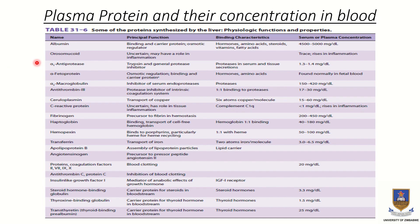These are the plasma proteins and their concentrations. We have albumin, which serves as an oncotic protein. We have transferrin, which transports ions. We also have coagulation factors for blood clotting, and so on.